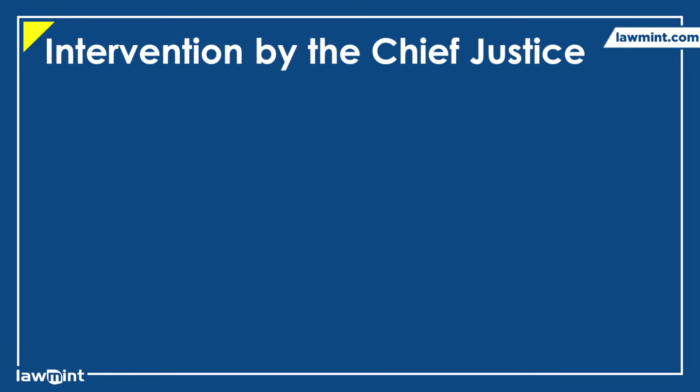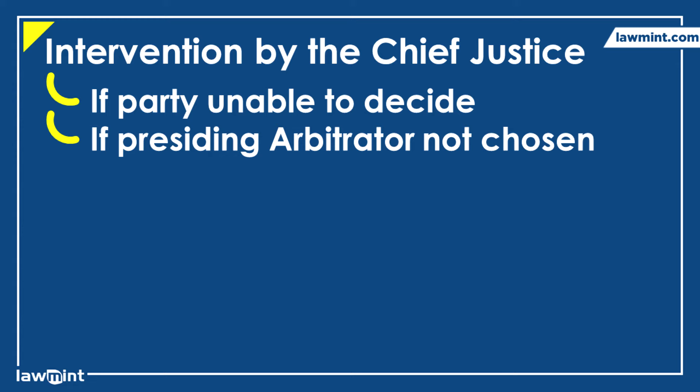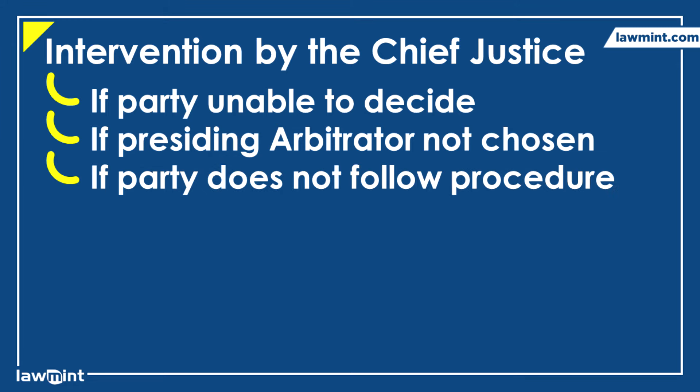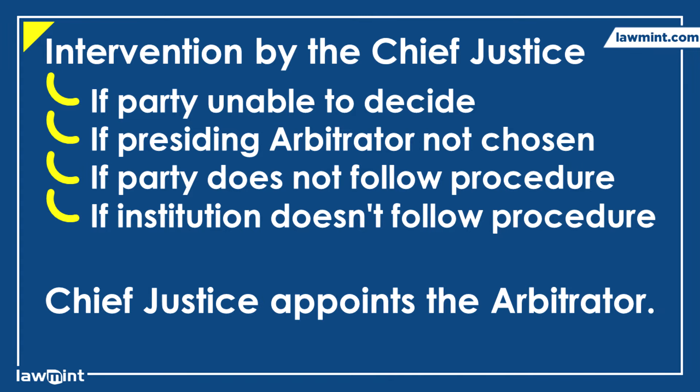Next, let us look at the intervention by the Chief Justice in the appointment of arbitrators. The act provides certain situations where the Chief Justice of the High Court or the Supreme Court may intervene. For example, if one of the parties is unable to decide on their arbitrator within 30 days of being asked to do so, or the two appointed arbitrators are unable to choose the presiding arbitrator, or one or both parties do not follow the agreed procedure, or if an institution managing the arbitration does not follow its prescribed procedure. In any such case, the Chief Justice can appoint the arbitrators or designate any other judge from the same court to handle the appointment.